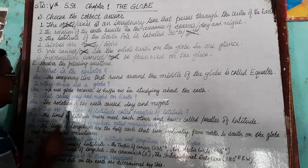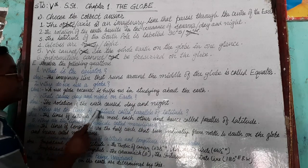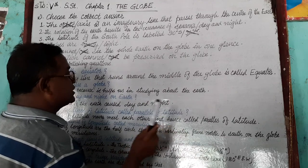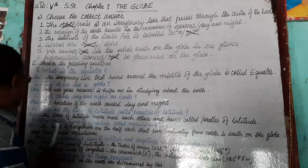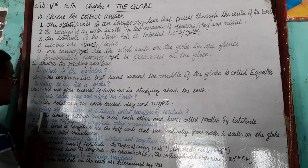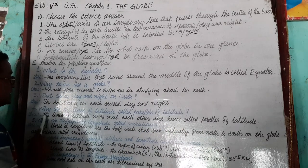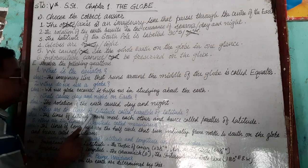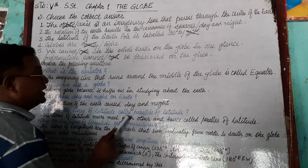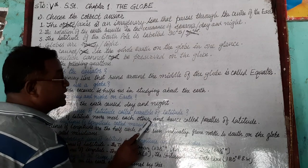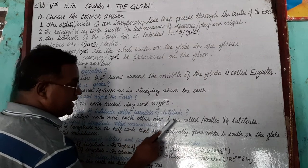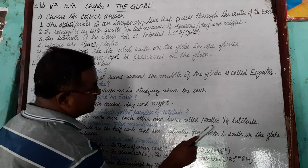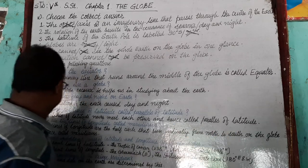Why are the lines of latitude called parallels of latitude? The lines of latitude never meet each other, and hence they are called parallels of latitude.